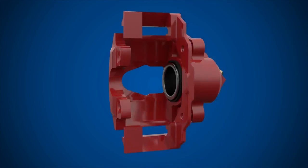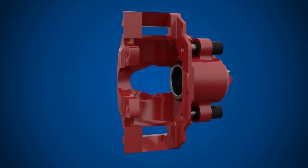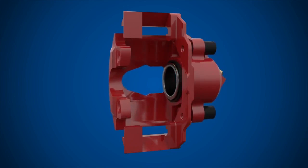Next, we have the carrier, which is a cast metal frame mounted to the vehicle. It holds the brake pads and caliper body. Two slider pins allow the caliper body to slide back and forth as the piston moves.